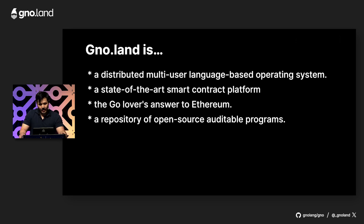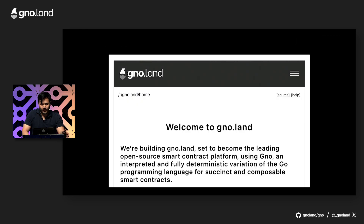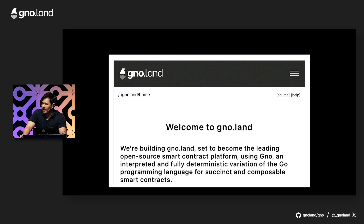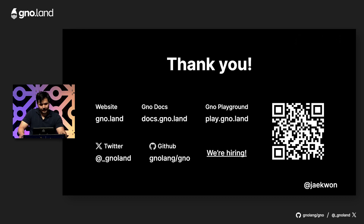To summarize, Gnoland is a distributed multi-user language-based operating system — the state of the art smart contract platform and the Go lover's answer to Ethereum. We also want Gnoland to be a repository of open-source auditable programs. Even our home page is rendered through Gno code and you can see the source. Every smart contract has a rendered page and you can always see the source. Please join us in our work with the VM implementation, garbage collection, runtime upgrading, and language enhancements — or fork the GnoVM and make an entirely new language, it's a pretty good starting point. We are hiring. Thank you very much.